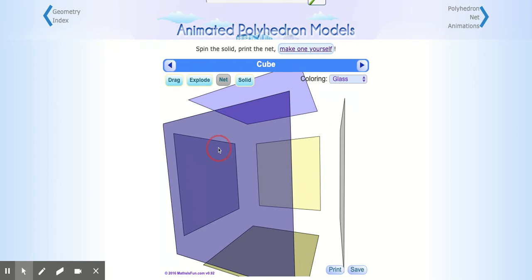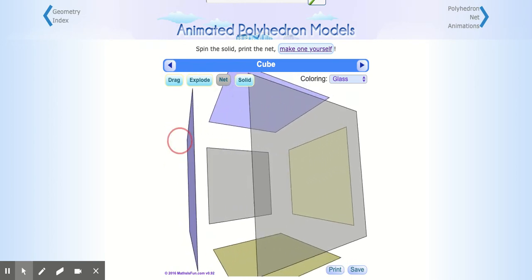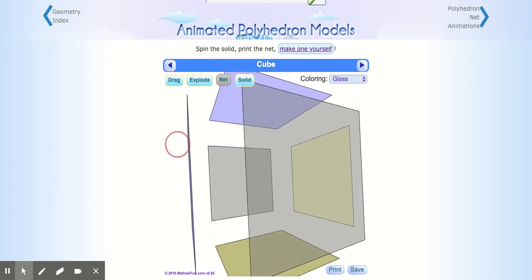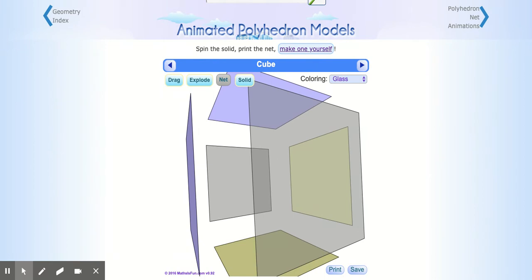Again, we can move it to get a better angle. This is our faces exploded out, separated away from each other, so we can get maybe a better view of how many faces there are and how they're all connected. I really enjoy this view as a step in between that solid and that net.